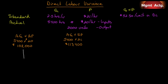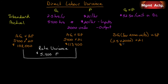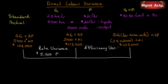Our rate variance — it's not called a price variance now, it's called a rate variance because this is the rate per hour. The rate variance is $5,400 favorable because $108,000 minus $113,400 is negative $5,400, making it favorable. Now let's do the standard quantity for 2,000 units. 2.5 hours per unit times 2,000 units times the standard price of $21 should have cost us $105,000. Our efficiency variance is $113,400 minus $105,000 equals $8,400 positive — unfavorable.